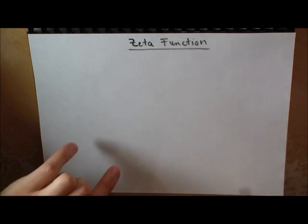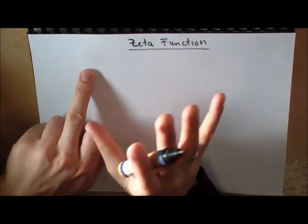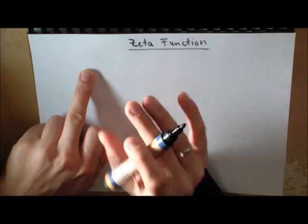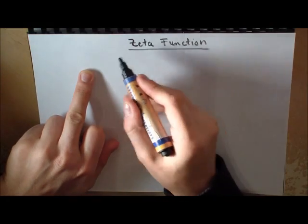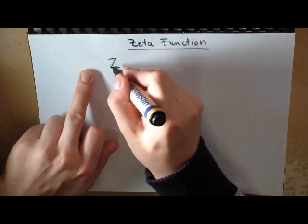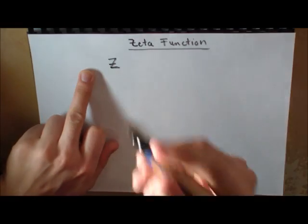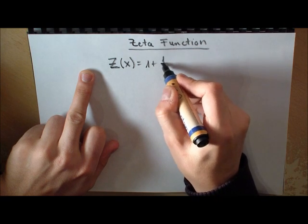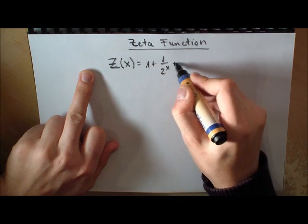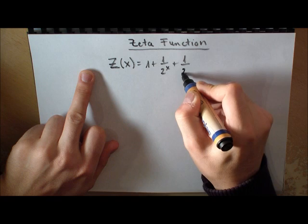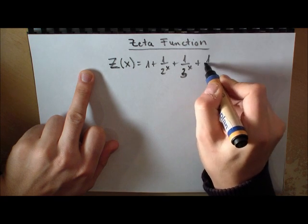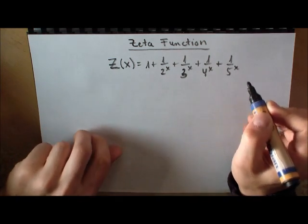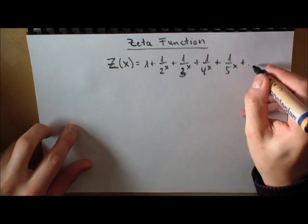Where it all starts is we want to prove a very fundamental thing, the product representation of the zeta function. Where we start off is I just use Z again. I'm not using the actual sign of zeta because it's just annoying to write it down. I'm writing this down: 1 over 2 to the x plus 1 over 3 to the x plus 1 over 4 to the x plus 1 over 5 to the x, and this is continuing on.